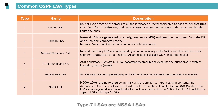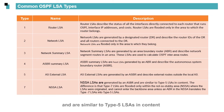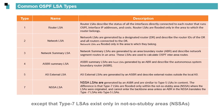Type 7 LSAs are NSSA LSAs. They are generated by an ASBR and are similar to Type 5 LSAs in content, except that Type 7 LSAs exist only in Not-So-Stubby Areas (NSSAs).